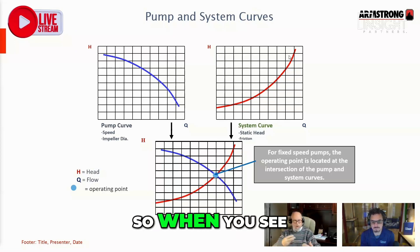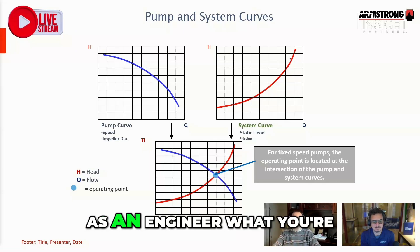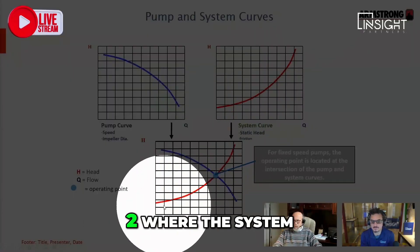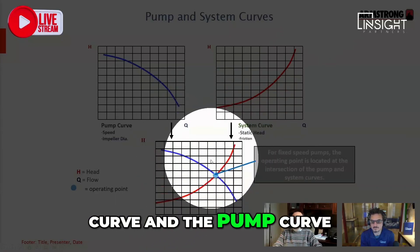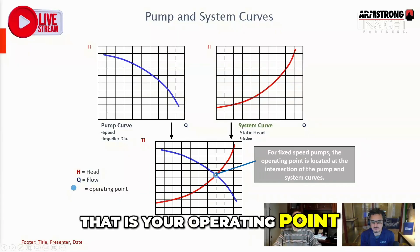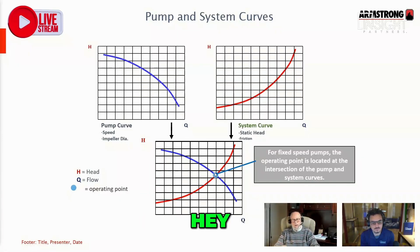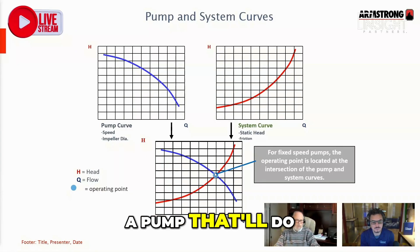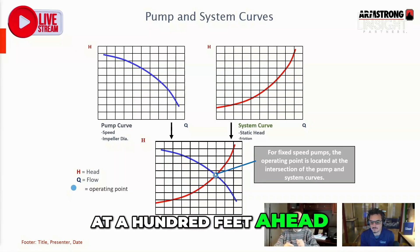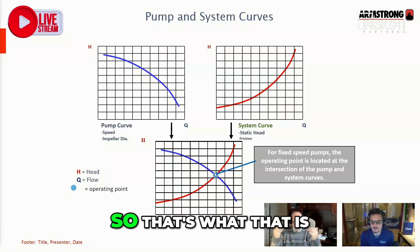So when you see a pump curve, what you're getting is the intersection of the two — where the system curve and the pump curve intersect, that is your operating point. That's the duty point that you've selected, or you've said, 'Hey Mr. Armstrong, I want a pump that'll do 5,000 GPM at 100 feet of head.' And that's where that dot's going to be.